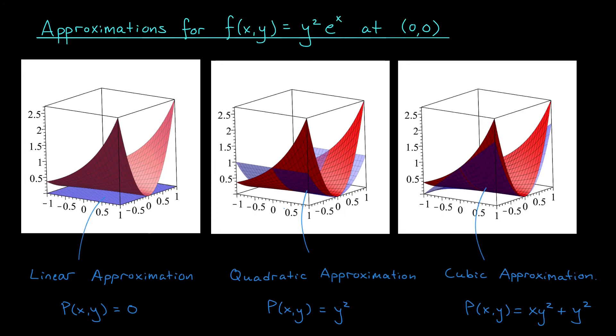Here's a quick example using the function f(x,y) = y²e^x. Its linear approximation at the origin is given by the tangent plane z = 0. If, however, we take into account its second partial derivatives as well, and you'll see how to do this next week,